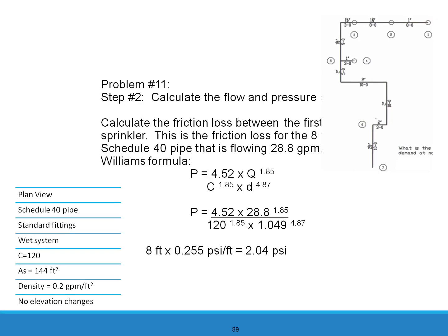Step 2, calculate the friction loss between the first sprinkler. This is the friction loss for the 8 feet of Schedule 40 pipe that is flowing 28.8 GPMs. Using the Hazen-Williams formula, we find that P is equal to 4.52 times Q to the 1.85 power divided by C to the 1.85 power times D to the 4.87 power. We have 8 feet times 0.255 PSI friction loss per foot, and that will give us a friction loss of 2.04 PSI.